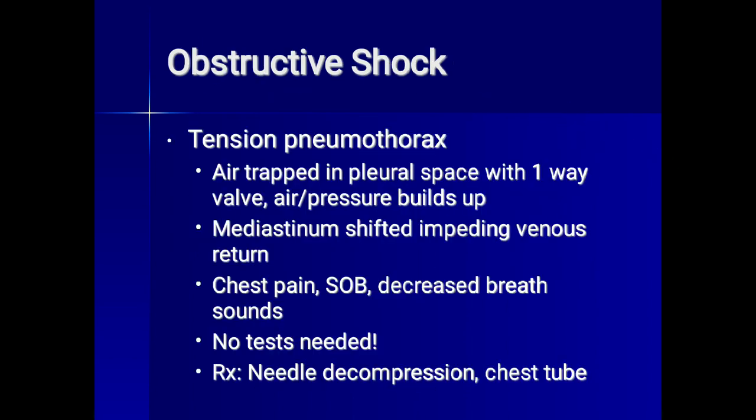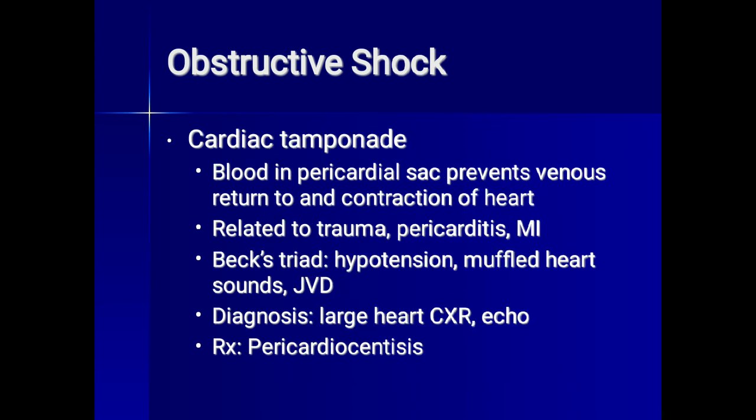Obstructive shock: tension pneumothorax occurs when air is trapped in the pleural space with a one-way valve, pressure builds up causing mediastinal shift and impeding venous return. Presentation includes chest pain, shortness of breath, and decreased breath sounds. No test is needed — treatment is immediate needle decompression followed by chest tube. Cardiac tamponade involves blood in the pericardial sac preventing venous return and cardiac contraction. Causes include trauma, pericarditis, and myocardial infarction. Signs are Beck's triad: hypotension, muffled heart sounds, and jugular venous distension. Diagnosis is by chest x-ray (large heart silhouette) and echo; treatment is pericardiocentesis.